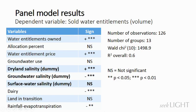We ran the model over several spatial characteristics to find the influence between salinity and other factors on water entitlement sales per river valley. We found that dryland salinity and groundwater salinity have a major impact on water entitlement sales, but surface water salinity was found to be not significant in the model. Areas in the Murray-Darling Basin that were affected by dryland salinity were found to have sold larger volumes of water entitlements. Hence, we can say that water entitlement trading is used to deal with long-term productive issues such as dryland salinity.